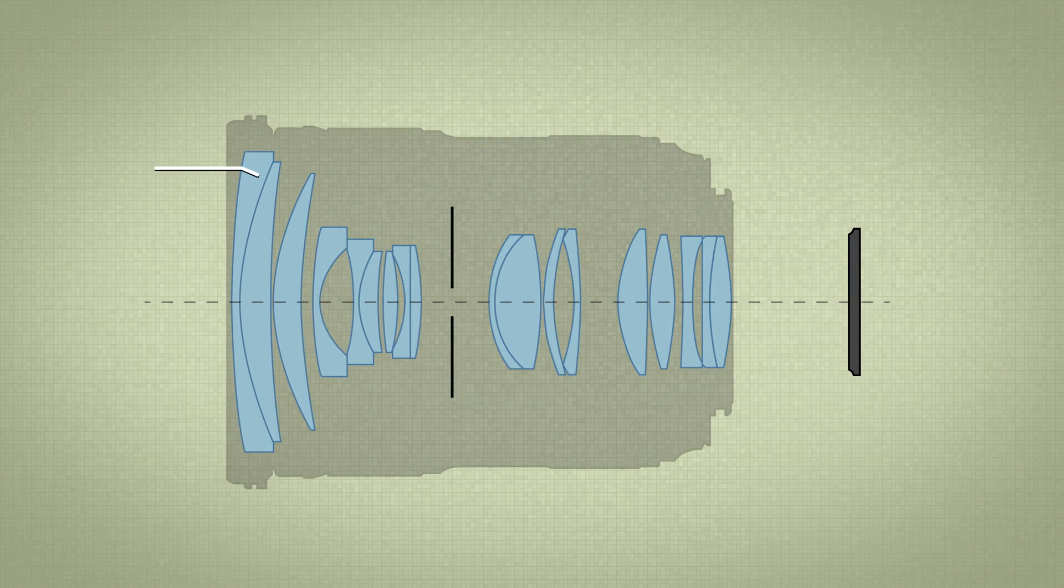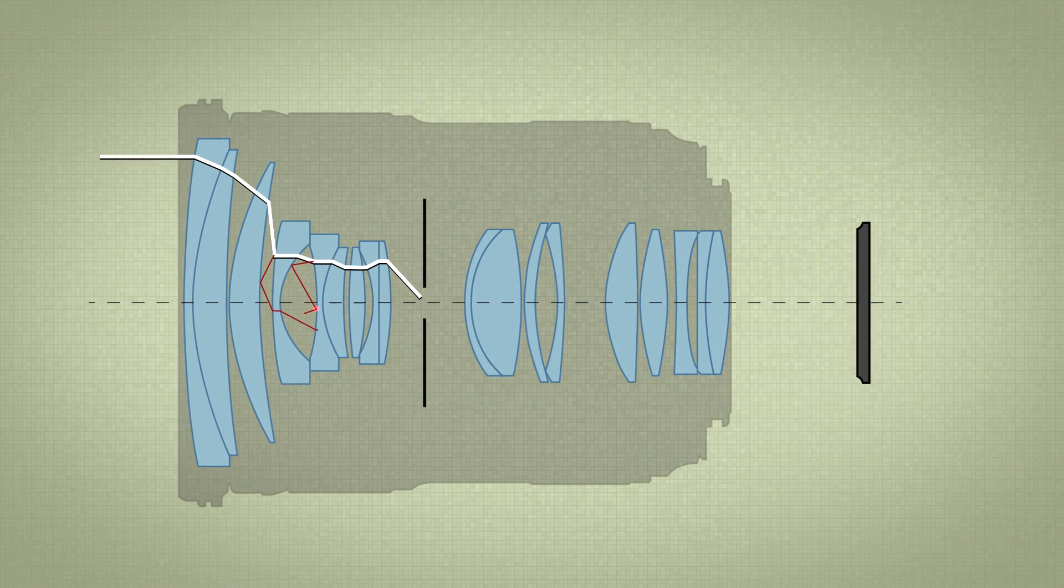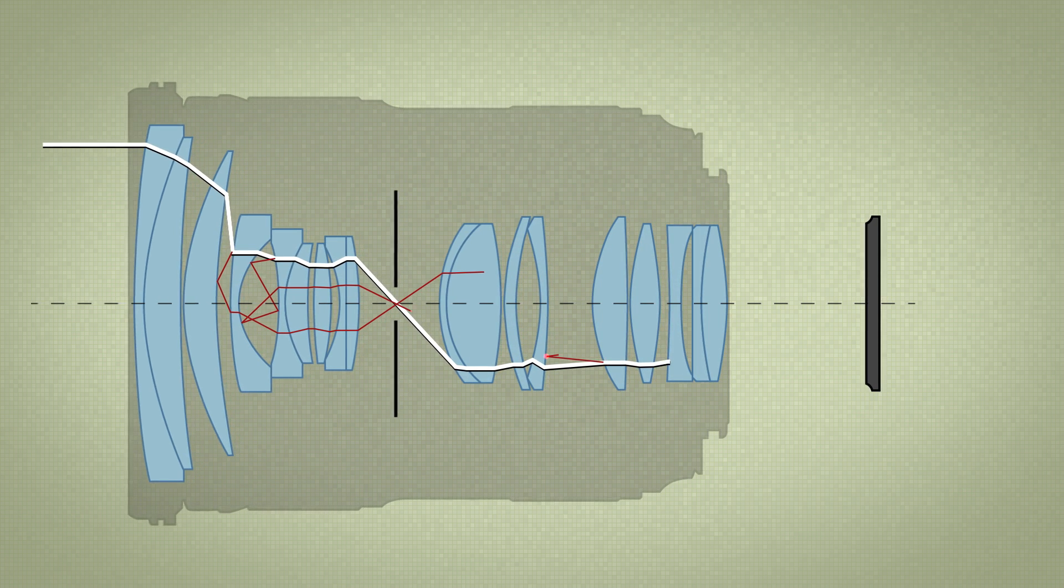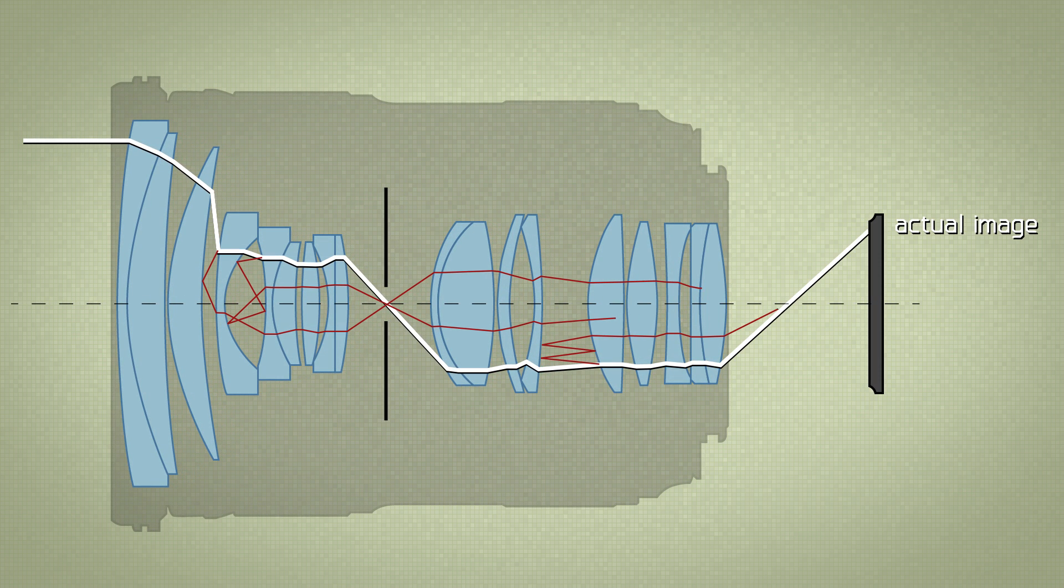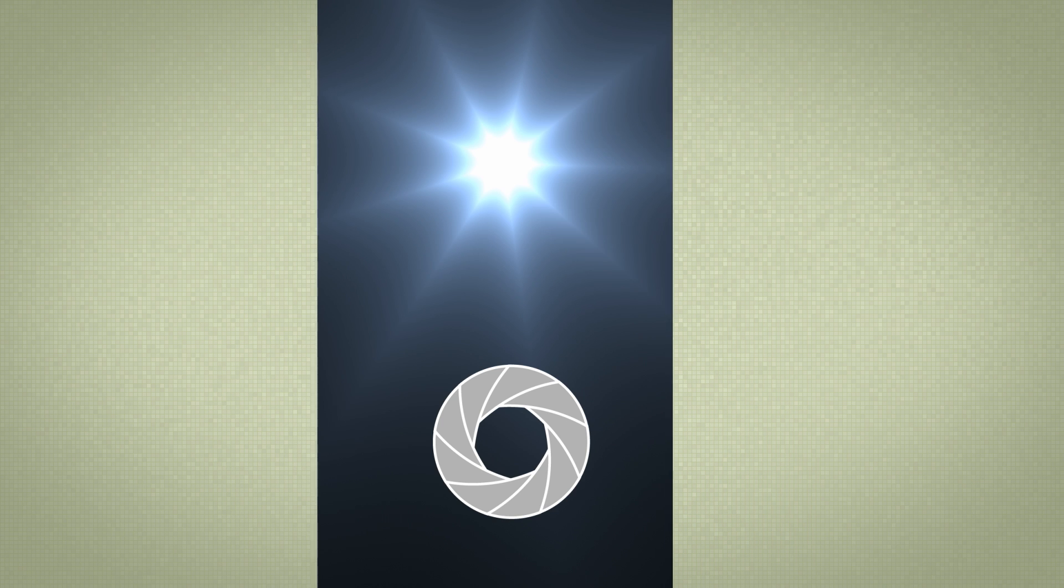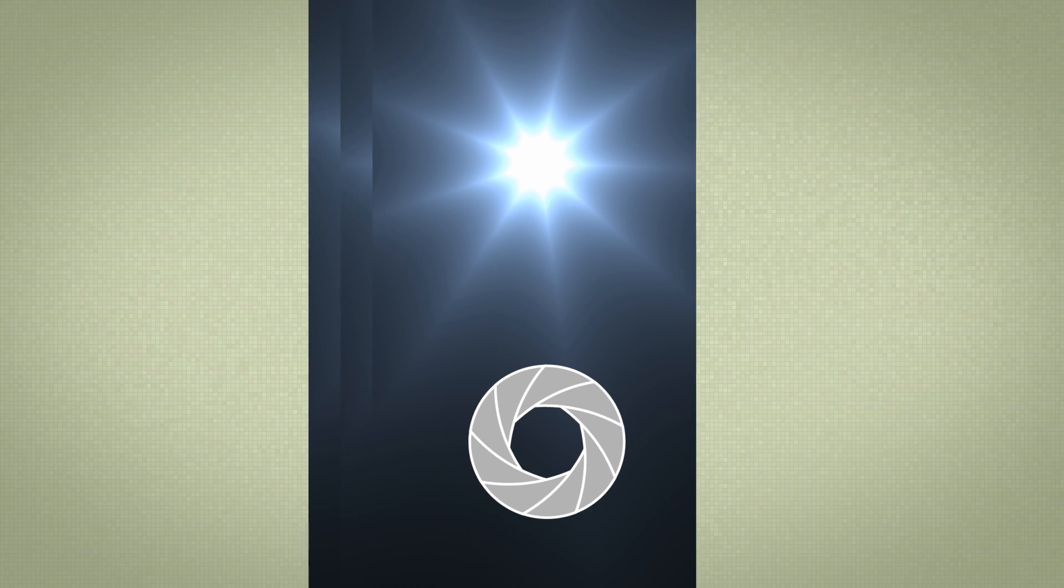What we call lens flare is the sum of different optical phenomena, defined by how much and how often a light gets bounced and reflected inside the lens. An intense light without any bounces is called a starburst, and it gets its star shape from the diffraction at the aperture that sits inside the lens. The number of points this star has is defined by the number of blades in the aperture.